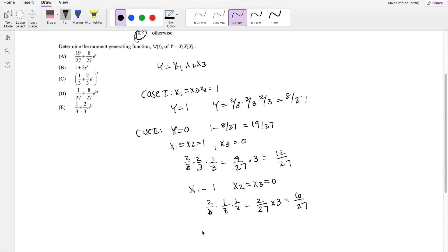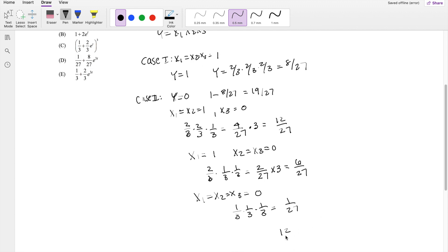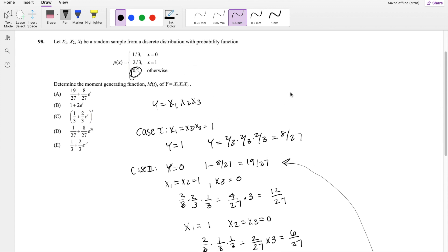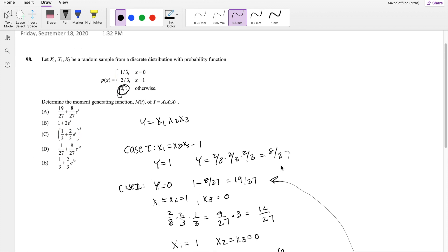You can also get all 0s if x1, x2, and x3 are all equal to 0. So that happens when it's 1/3 times 1/3 times 1/3, which equals 1/27. When you add all of these together, 12/27 plus 6/27 plus 1/27, you get 19/27, which is exactly the same thing as we got over here. Okay, but honestly, if you wanted to save time, just understand that there's only two scenarios. And if this is 8/27 for y equals 1, then the other one must be the complement.